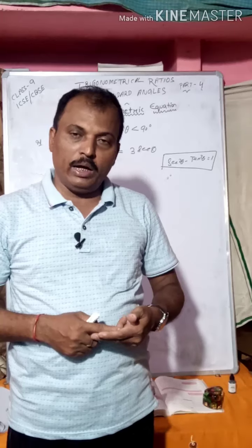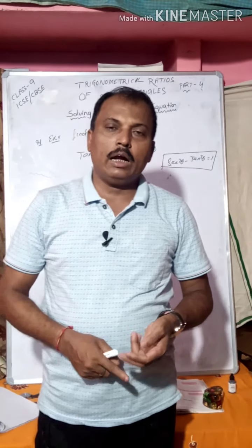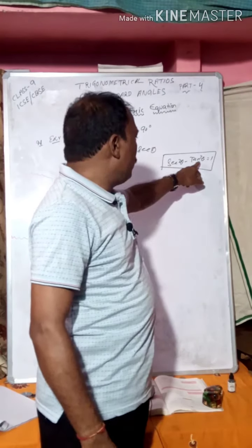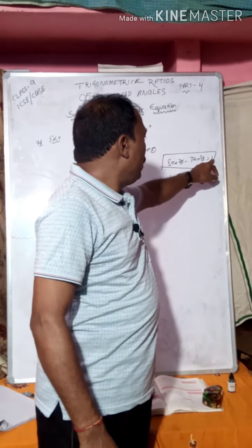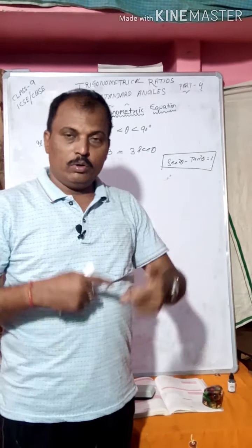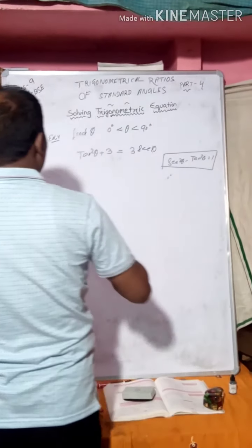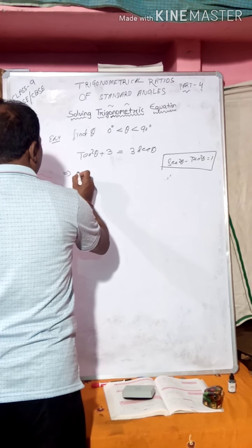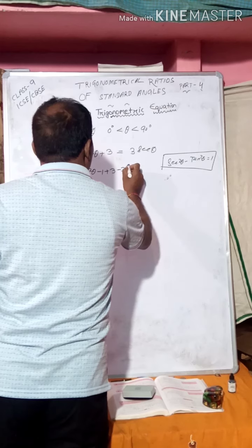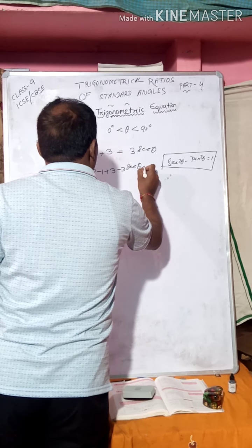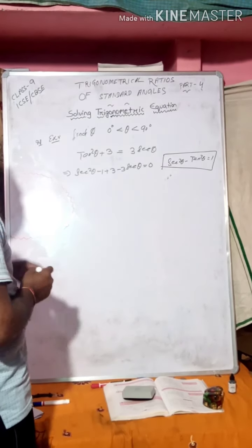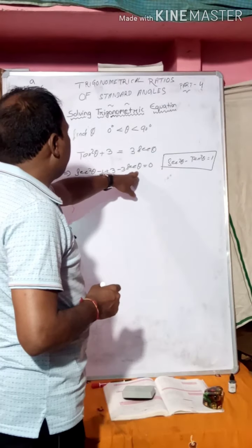We know sin²θ + cos²θ = 1, sec²θ - tan²θ = 1, and cosec²θ - cot²θ = 1. So replacing tan²θ with sec²θ - 1 in the equation: (sec²θ - 1) + 3 - 3secθ = 0, which simplifies to sec²θ - 3secθ + 2 = 0.